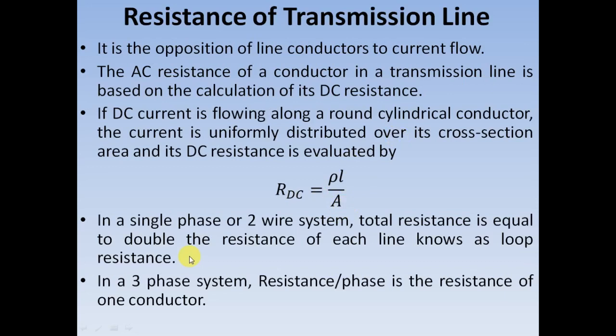If you are considering a single-phase 2-way system, the total resistance is actually double the resistance of each line, and it is also referred to as loop resistance. Whereas in the case of a 3-phase system, the resistance per phase is considered as the resistance of a single conductor. By using this relation, we will be able to calculate the DC resistance value.